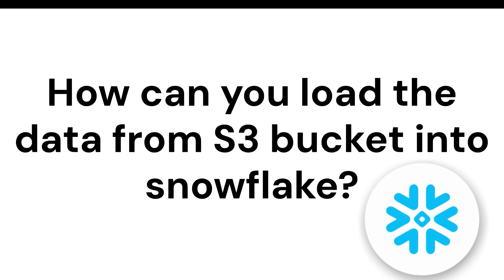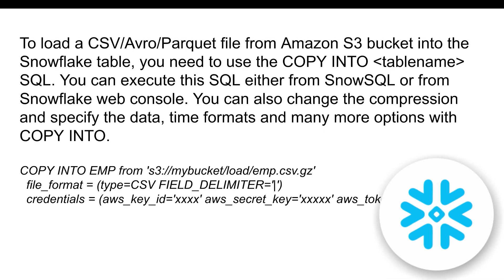The next question is: how can you load data from an S3 bucket into Snowflake? There are two options. The first is to use the COPY INTO command. To load any file format from an Amazon S3 bucket into a Snowflake table, you use COPY INTO that table name. You can execute this SQL from Snow SQL or the Snowflake web console, and you can provide settings like file format and encryption — for example, COPY INTO employee table from your S3 bucket location.